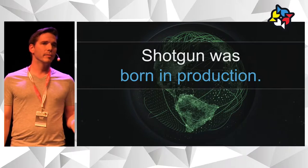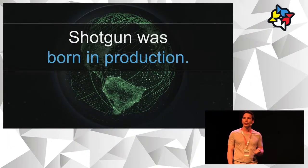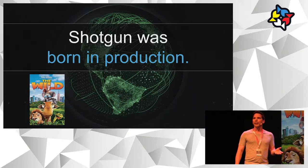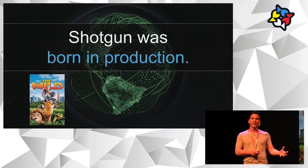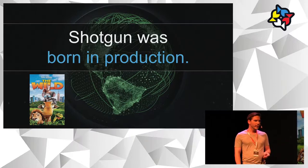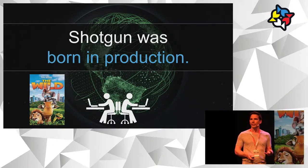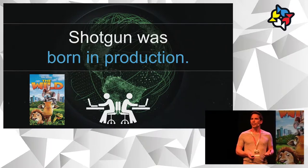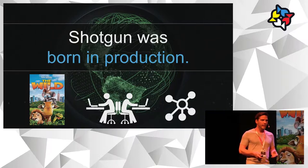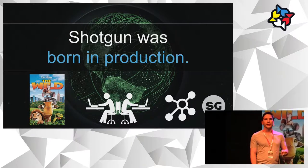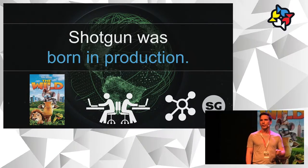Shotgun was born in production. Originally it was a consultation project for Disney, done for a movie called The Wild. The problem Disney were having was struggling to get their teams to collaborate and manage that flow of assets and shots right the way through production from start to finish. They brought in Don Parker and Isaac Rubin, who developed a web-based tool to allow Disney a much more streamlined way of managing their productions — a collaboration tool to track and review assets from script to screen. After the very successful production of The Wild, they produced the commercial tool: Shotgun.